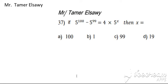If 5 power of 100 minus 5 power of 99 equals 4 multiply 5 power of x, then x equals - how to find x?